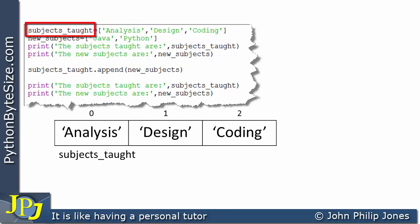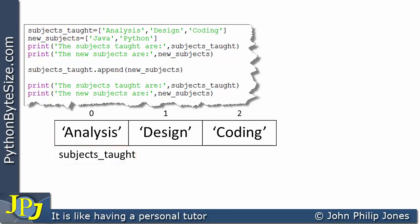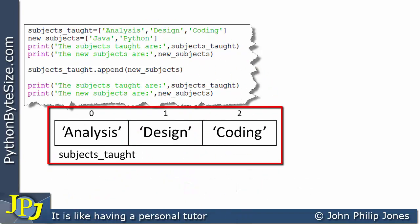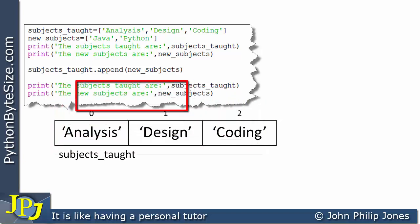If you look at the code you can see that subjects_taught is the name of the list, as shown in the diagram. This is an instance of the list class with three elements containing 'analysis', 'design', and 'coding'. Because this is an object which is an instance of the list class, it will have methods — one of which is the append method, looked at in the previous videos.